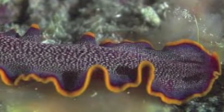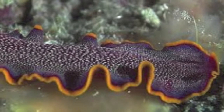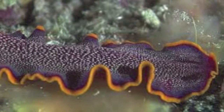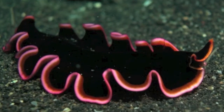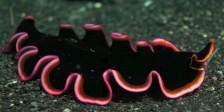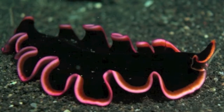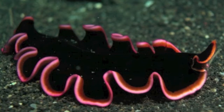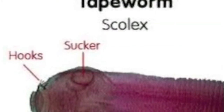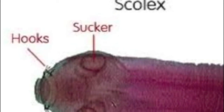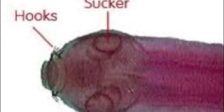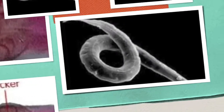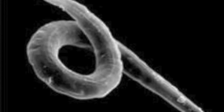Flatworms also have bilateral symmetry and have a definite head-to-tail region. Tapeworms have a pair of eyespots which detect light at the front end of the body. For protection, both the tapeworm and flatworm have a thick cuticle, which protects worms from being digested by their host's enzymes. Movement is controlled by either long muscles or by cilia. Reproduction can be sexual or asexual; however, many have developed ways to avoid self-fertilization.